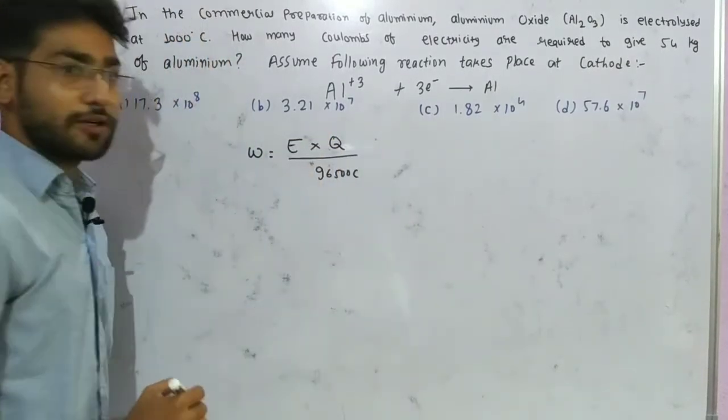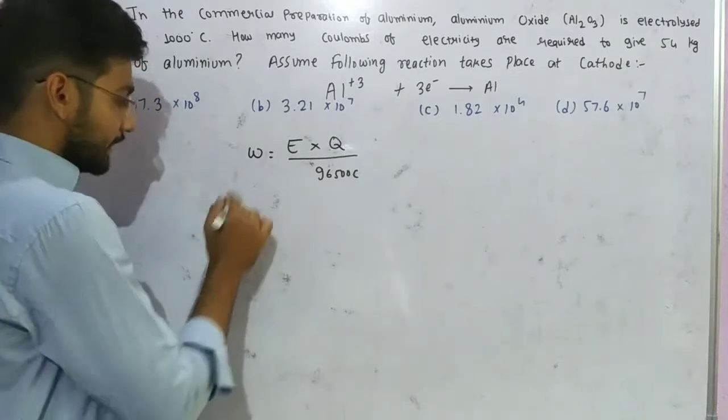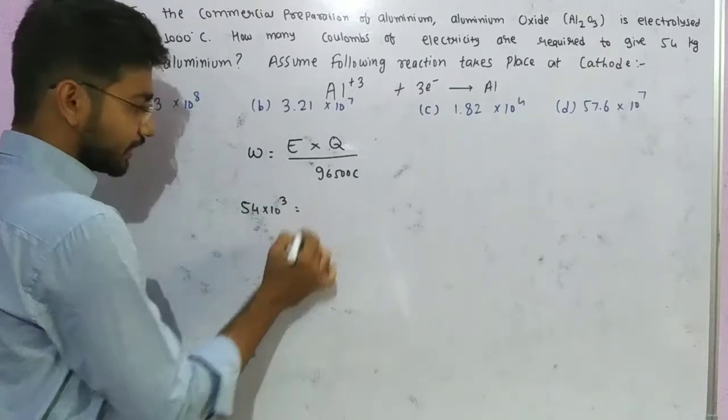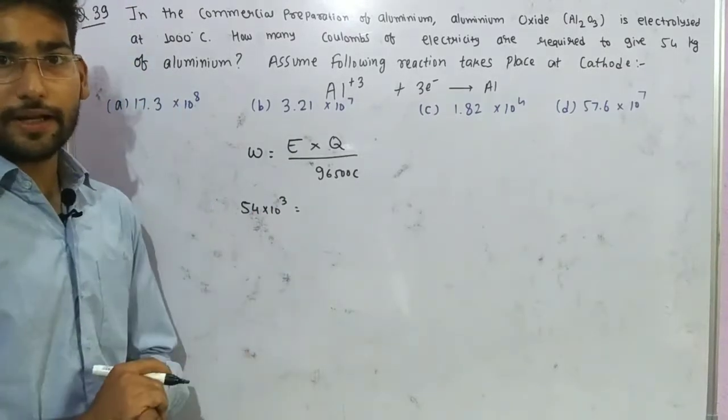The weight given is 54 kilograms, which means 54 times 10 to the power 3 grams. This is the weight we'll use in the calculation.